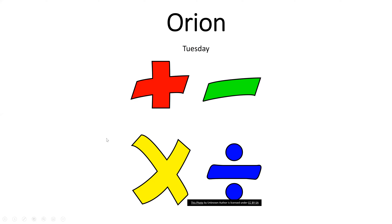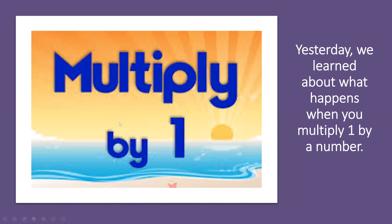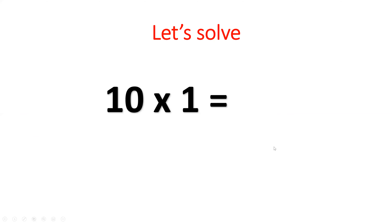Hey Orion. Welcome back to math. Today is Tuesday. Yesterday we learned about what happens when you multiply one by a number. Let's solve: ten times one. The answer is ten.